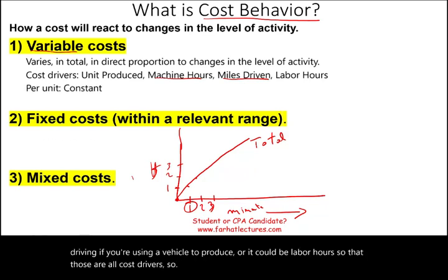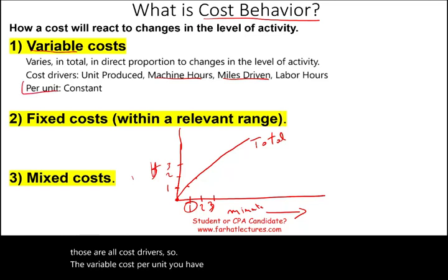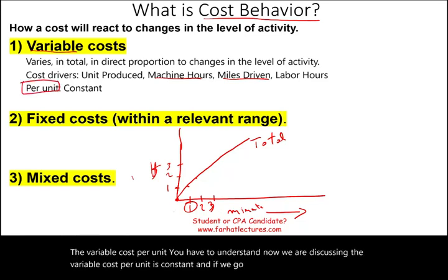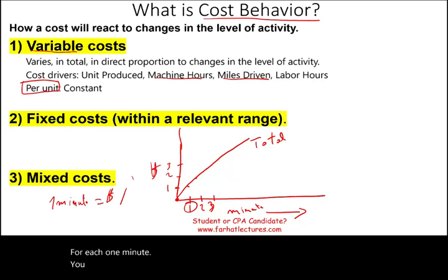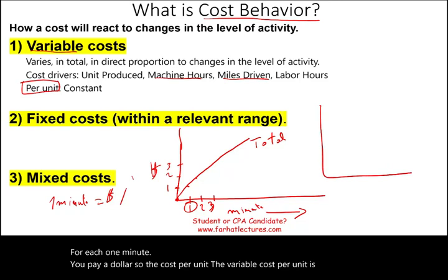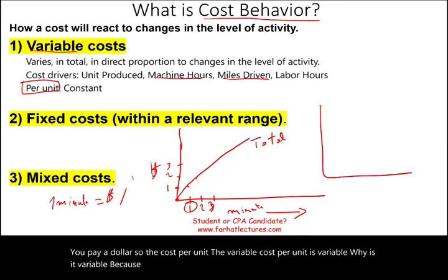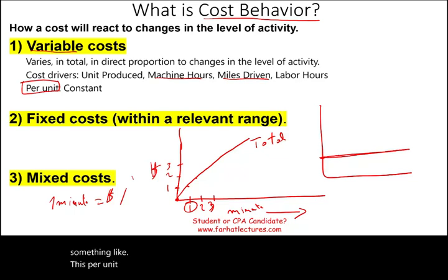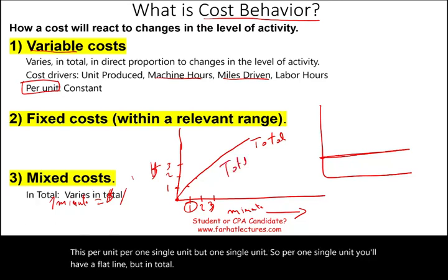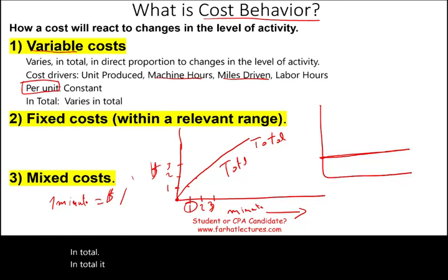The variable cost per unit is constant. Going back to the cell phone example, for each one minute, you pay $1. So the variable cost per unit is always the same — per one single unit, you'll have a flat line. But in total, it varies — it increases in total. Per unit it's $1, but the total cost grows as usage grows.